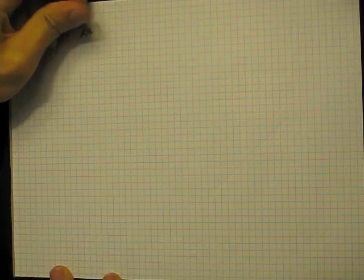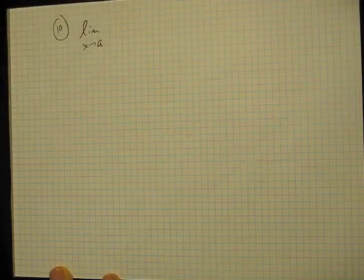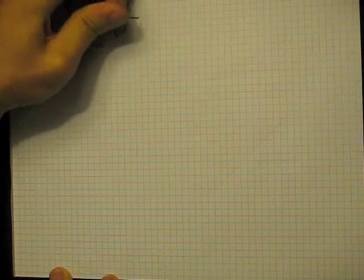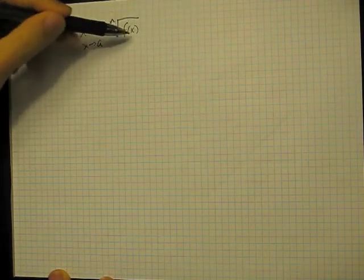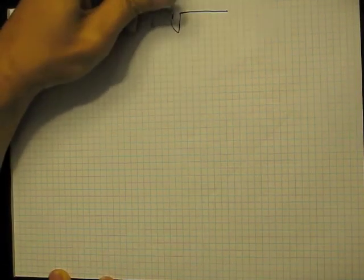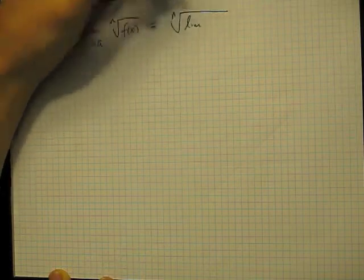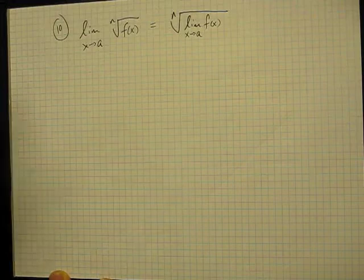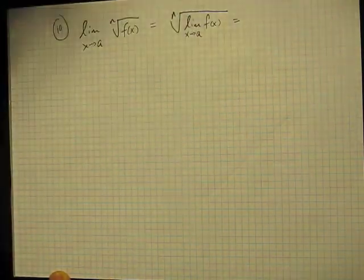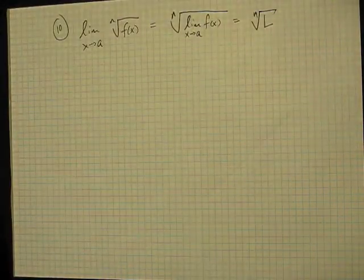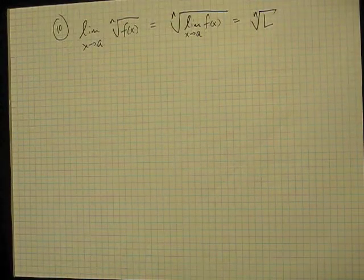If we take the limit as x goes to a of the nth root of the function f(x) — so instead of just having x in here, we've got a function — we can pass the limit directly through, and we get the nth root of L as our answer. Those are some limit laws. Let's take a look at some examples.